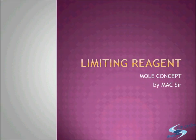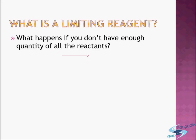Let's see what a limiting reagent is. In the last session we assumed all chemical reactions go to completion, but for going to completion it is required that the amount of reactants you have are in specific quantities. For example, nitrogen and hydrogen are used to make ammonia — one mole of nitrogen requires three moles of hydrogen, from the stoichiometric coefficients of this balanced equation.